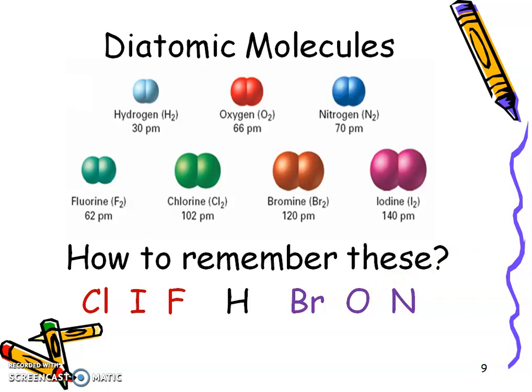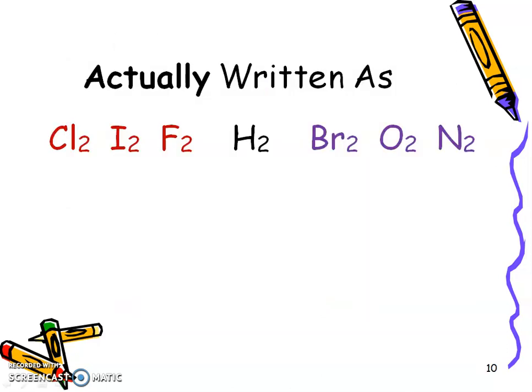These are seven diatomic molecules that they do not exist by themselves. They either exist as diatomic molecules bonded with themselves or they have to be bonded with another element to make a compound. So they're written technically like this. So I like to remember Cliff H Brom, but remember they're diatomic. So you need those little twos because that's actually how they exist in nature.